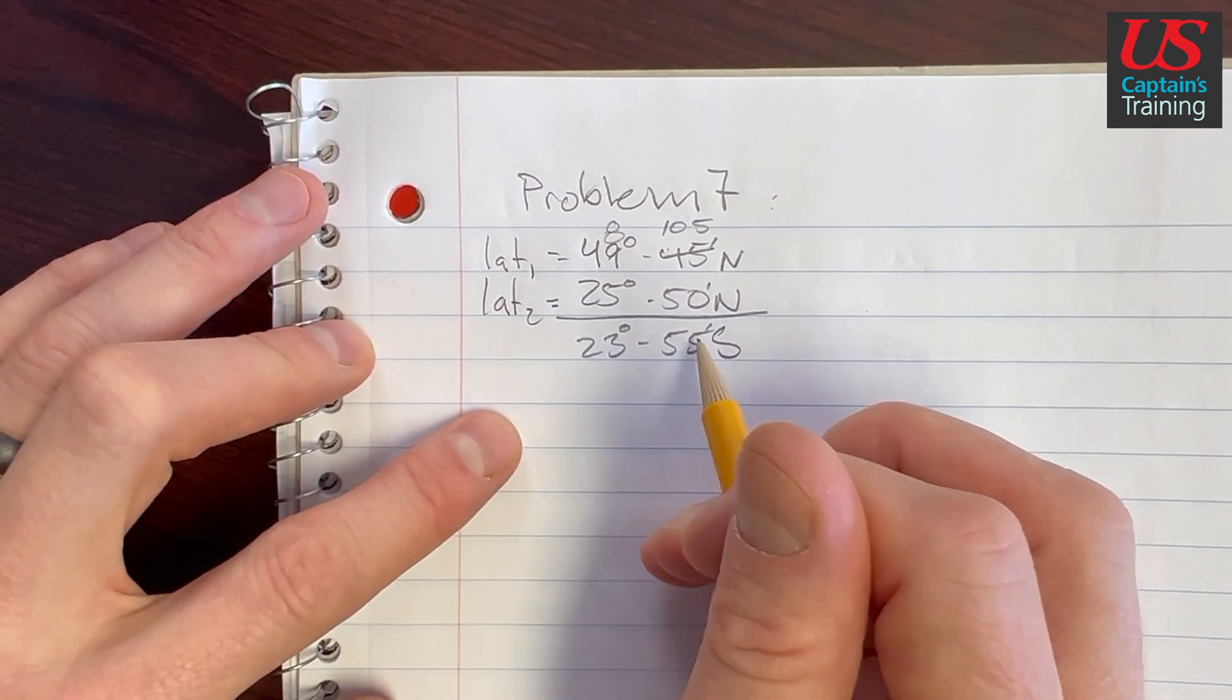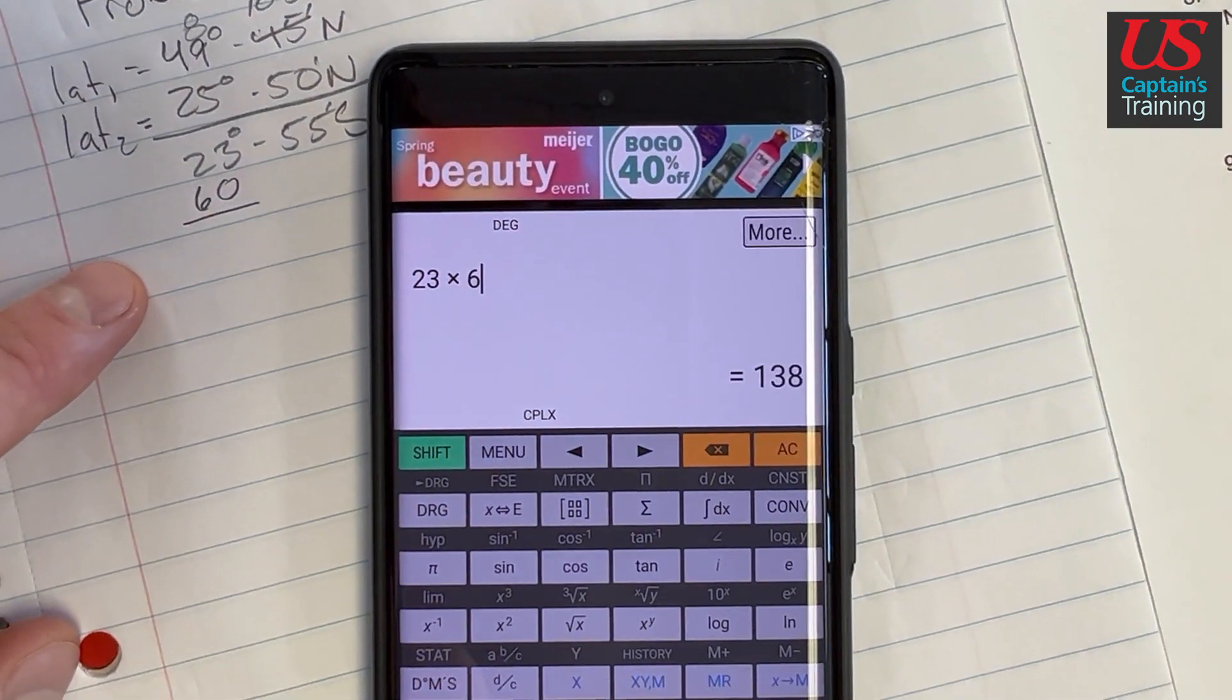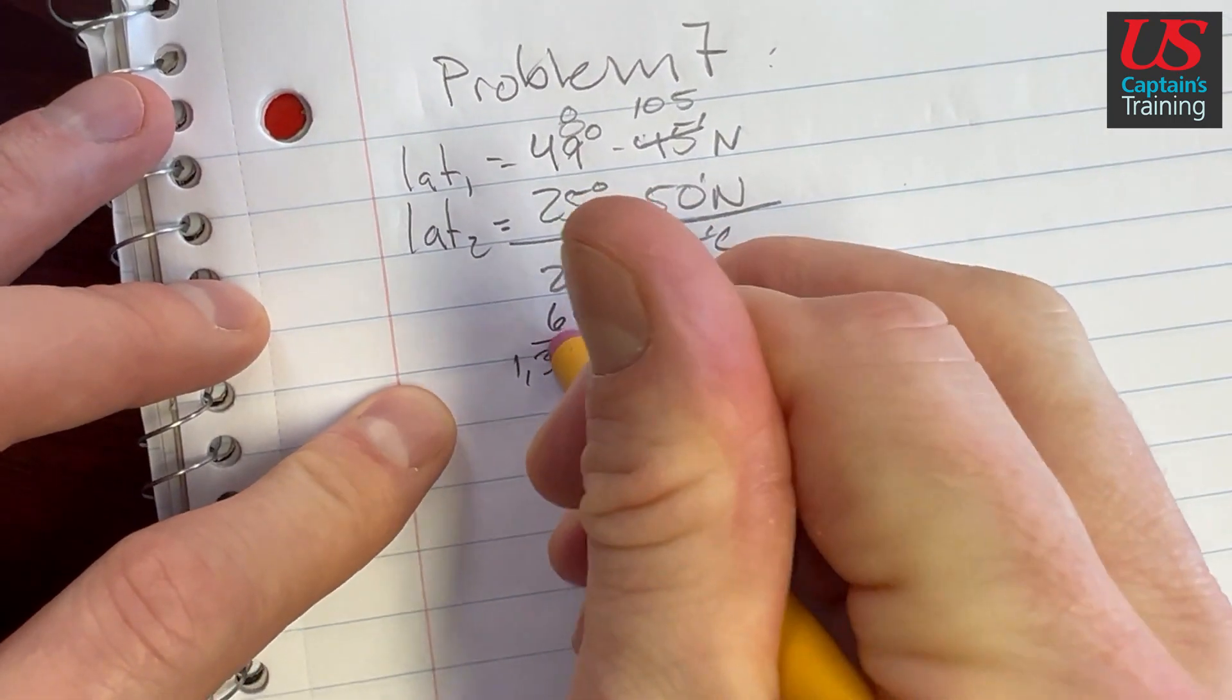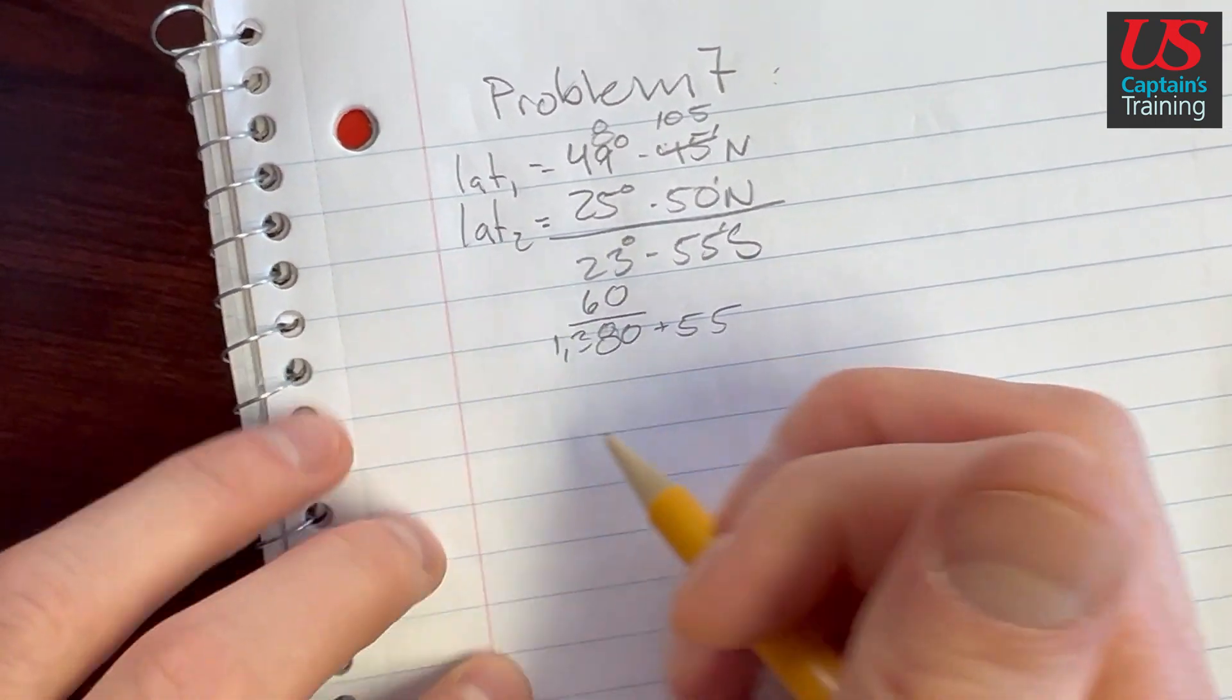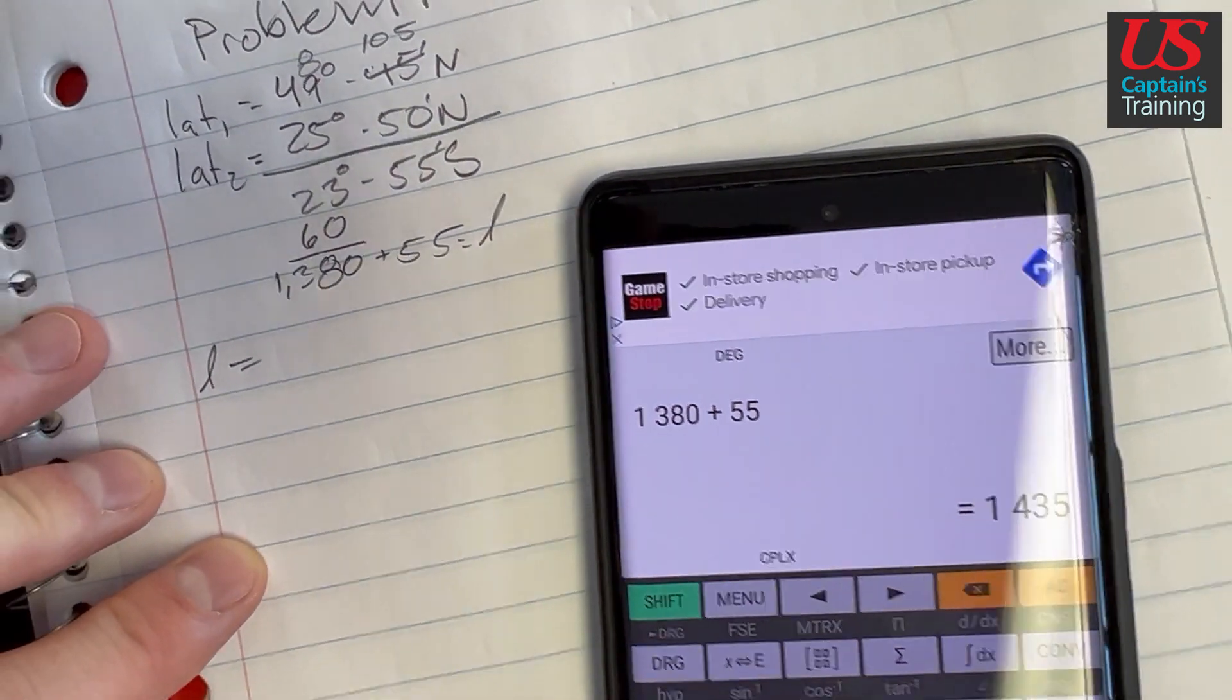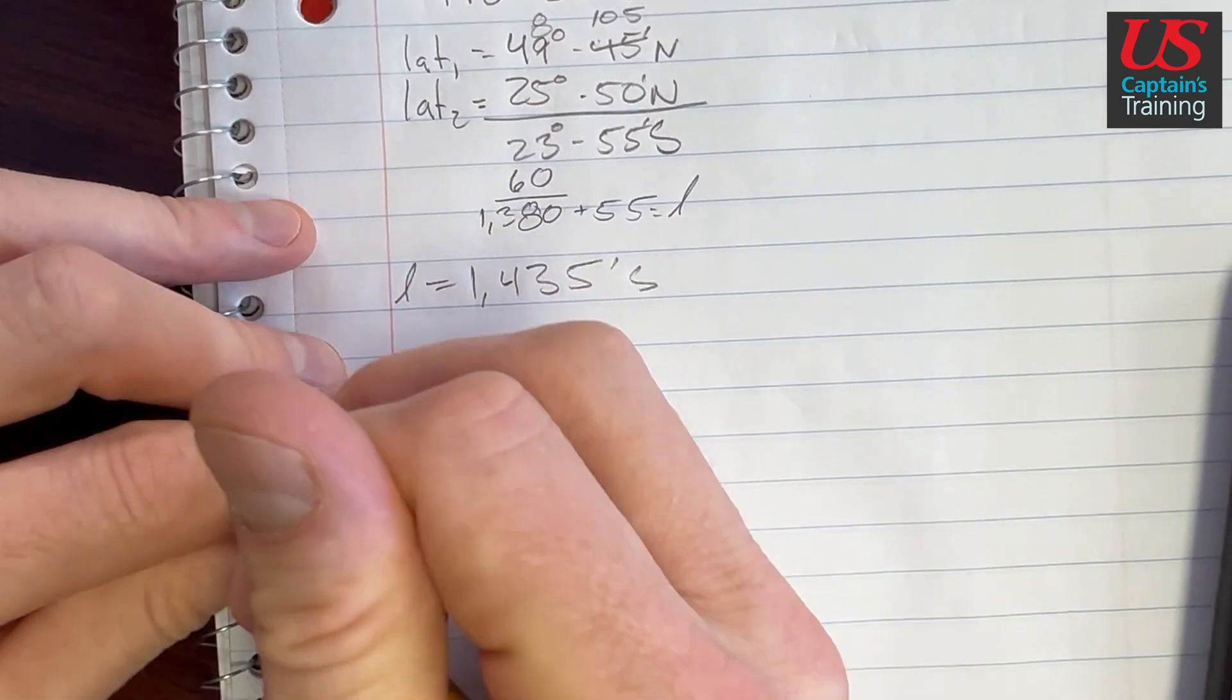We're going to change these degrees into minutes. And to go from degrees to minutes, we multiply by 60. 23 times 60 equals 1380. So we get 1380 plus these 55 minutes, and that will give us our little l. So little l is equal to 1380 plus 55 is equal to 1435, 1435 minutes south. That's our little l.